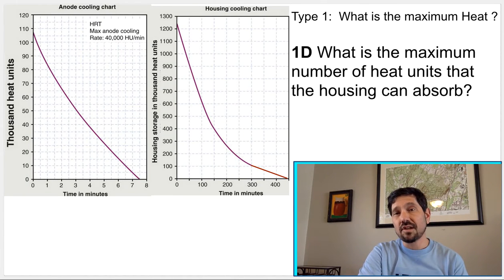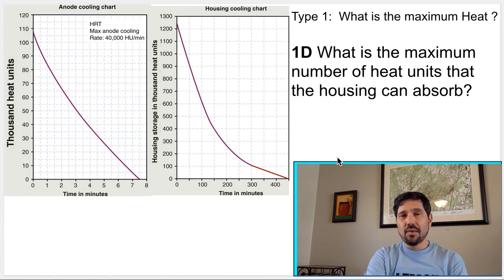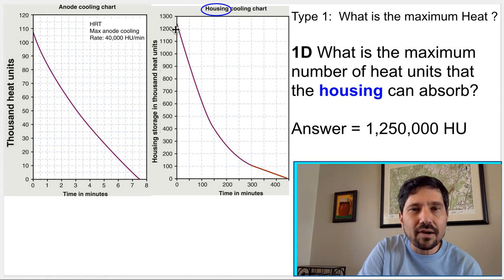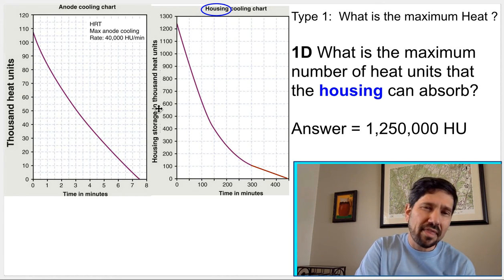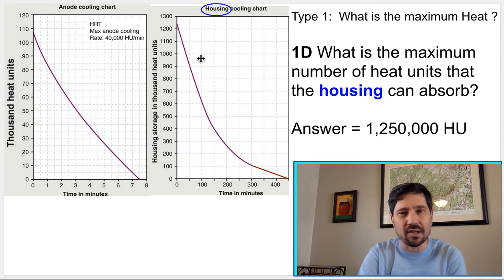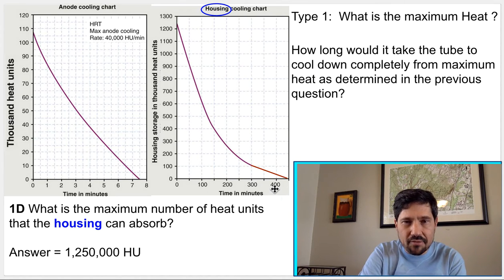Here's another one. It says, what is the maximum number of heat units the housing can absorb? The trick here is they've given us an anode cooling chart and a housing cooling chart, and they want to see us demonstrate that we can pick the right chart. So there's the word housing. I'm in business. And now I would just read off here. 1,250,000 heat units. And how long would it take to cool off completely? We'd see here it looks like 450 minutes out here.